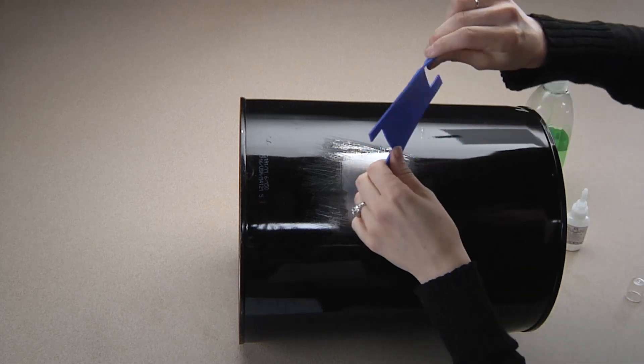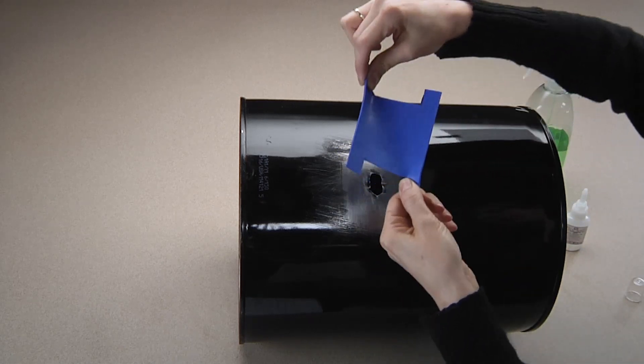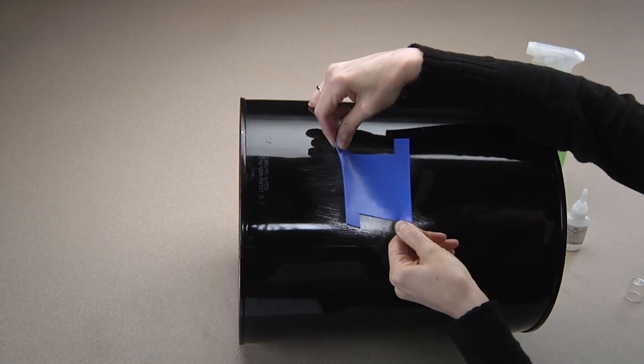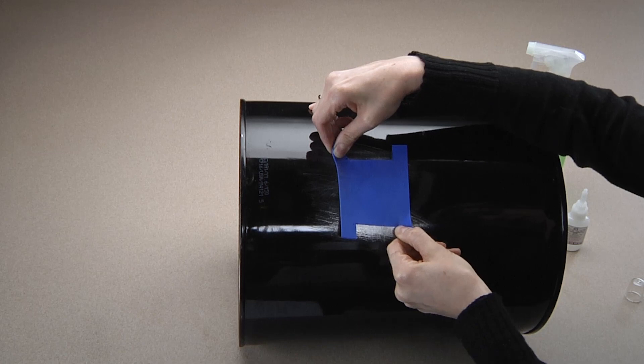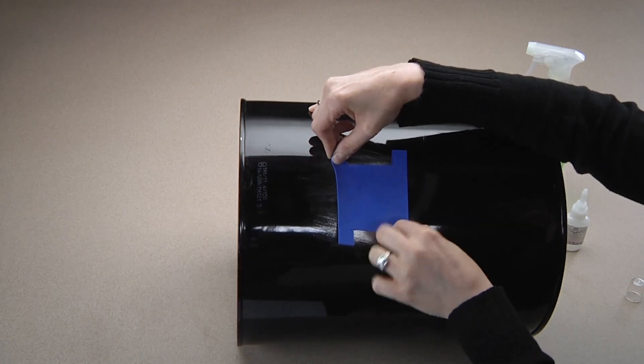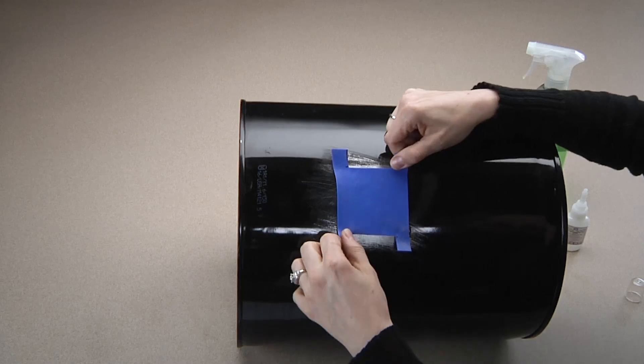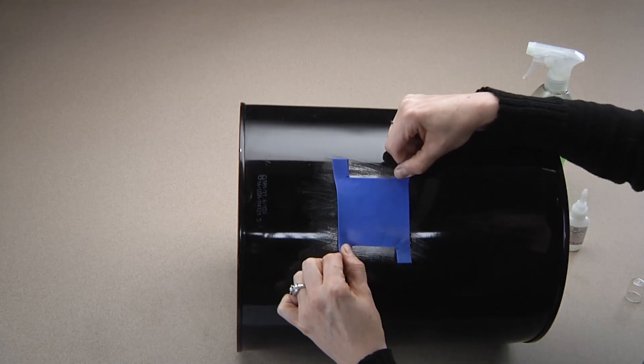Once covered, we will apply tension to the tabs so that the opposite two tabs are going to curl up, and we will press it to our prepared area. You will notice it will start to grab to your prepared area in seconds. Now, pull the other two tabs and press.